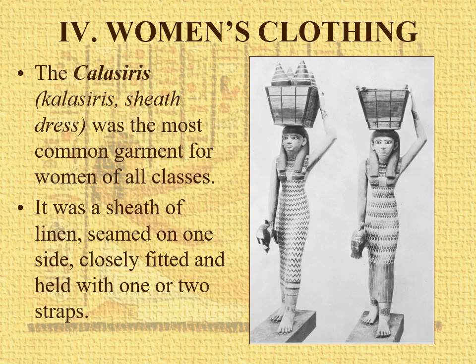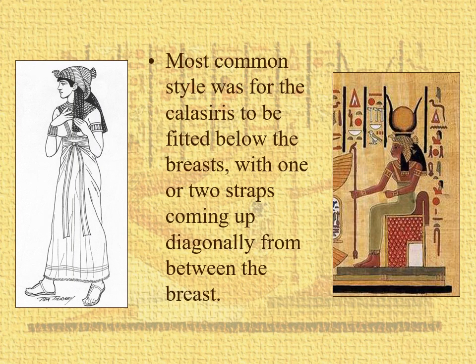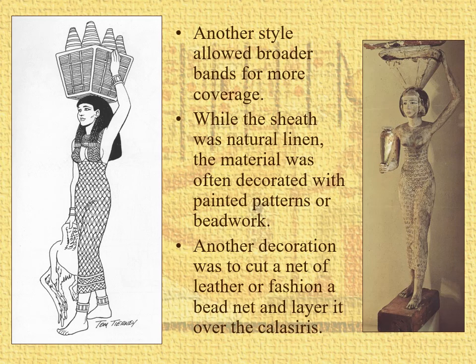Let's look at the women's clothing. The calisiris — a sheath dress — was a very common characteristic dress for women. A sheath of linen, seamed on one side, closely fitted. It looks like, how do you get in that? You can just pull it on — it's linen. Usually fitted and held with one or two straps over the bosom. Remember that nudity is not an issue, so the most common style was to have the strap go in between the breasts in a V-strap configuration, or coming off diagonally. More coverage if you had broader bands. You might have some painted patterns or beadwork on it.